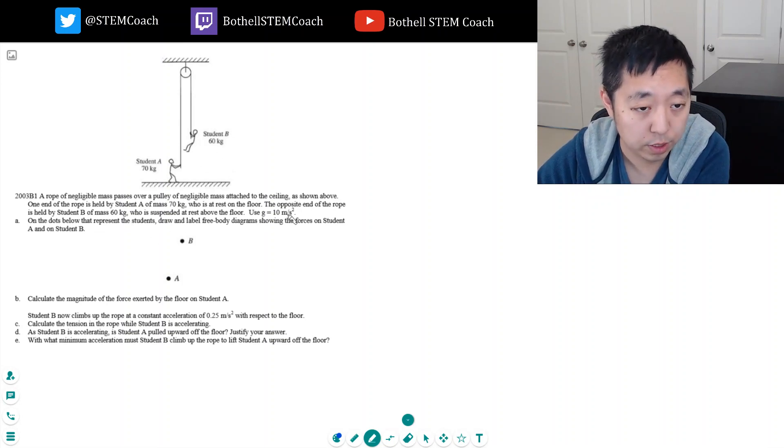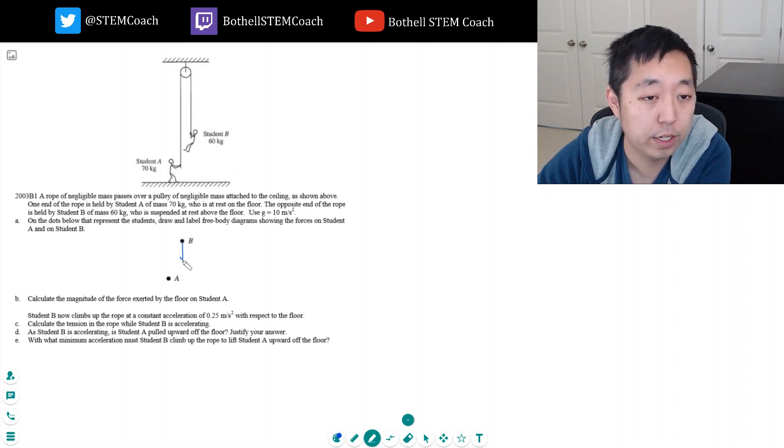Use G equals 10 meters per second squared. Draw and label free body diagrams showing the force on student A and B. So if I look at B, he's got gravity on him, we'll say 600 Newtons, M times G, and he's got the rope holding him up.